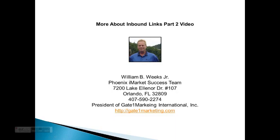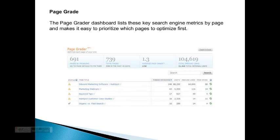Hi, this is William here, and today we're going to talk more about inbound links. PageGrade is a HubSpot software tool, and it comes with a dashboard that lists key search engine metrics by page and makes it easy to prioritize which pages to optimize first. You can see the page grader in the header at the top.